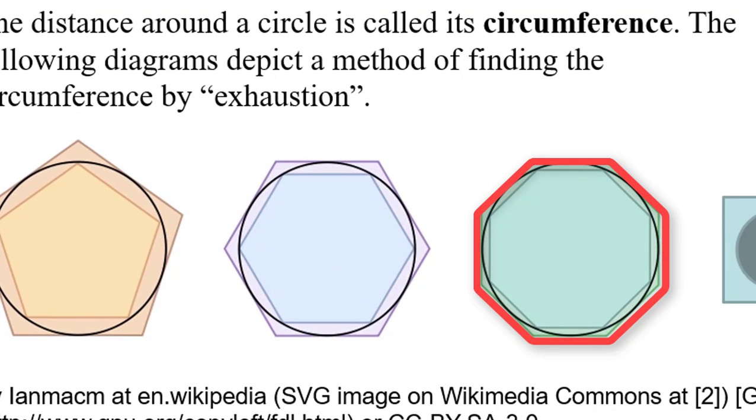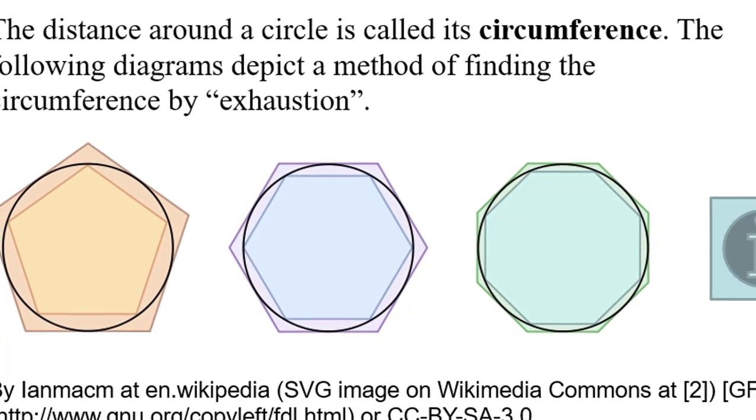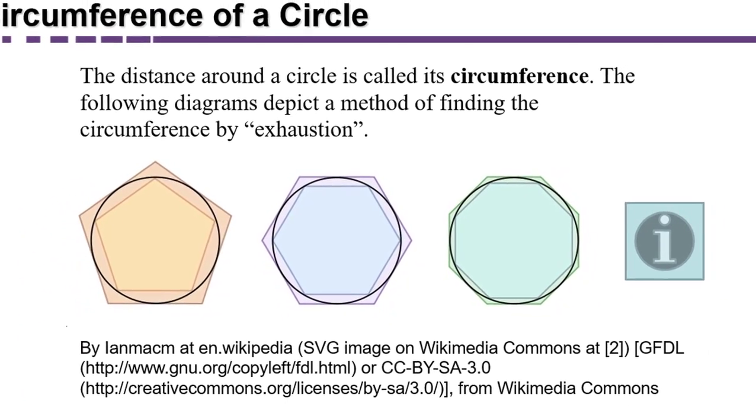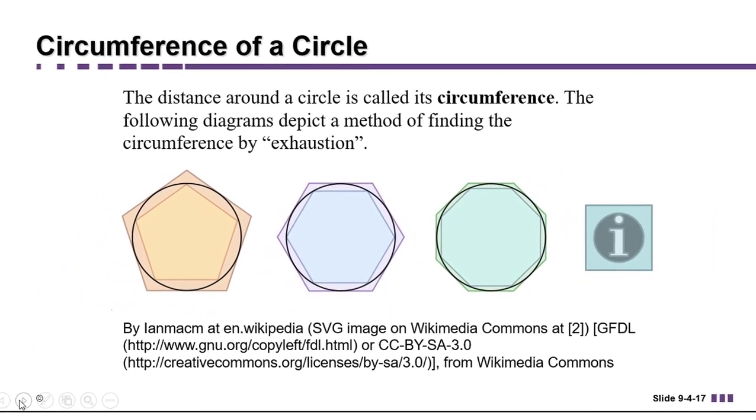These are called the circumscribed and inscribed polygons of the circle. We calculated the perimeter of those, and then we knew that the circle had a circumference somewhere in between.